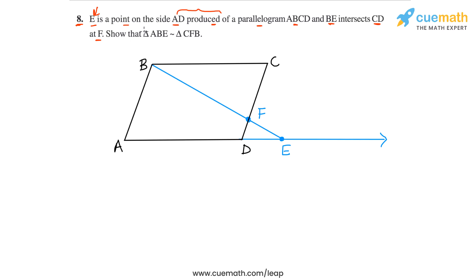Now we have to show that triangle ABE is similar to triangle CFB. So let me highlight these two triangles for you. So triangle ABE is ABE, this triangle.